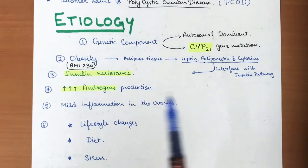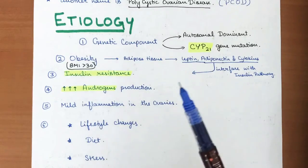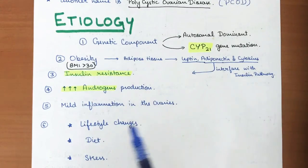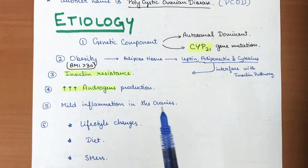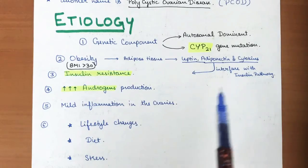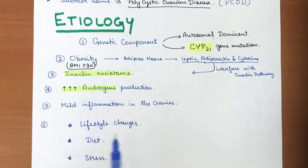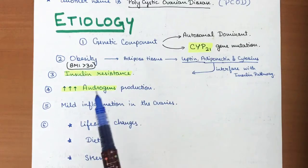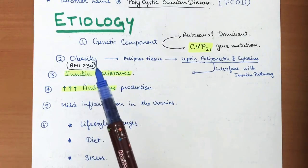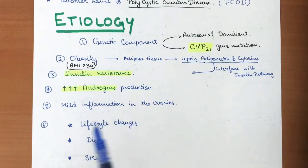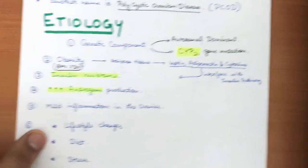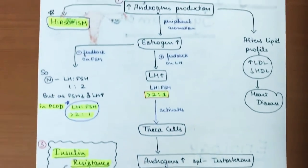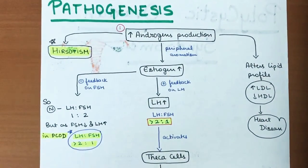High androgen production — hyperandrogenism — can also lead to polycystic ovarian syndrome. Sometimes mild inflammation in the ovaries, such as oophoritis occurring after puberty, can persist for many years and lead to PCOS. Certain lifestyle changes such as a sedentary lifestyle leading to obesity, poor diet, and stress are also aggravating factors.